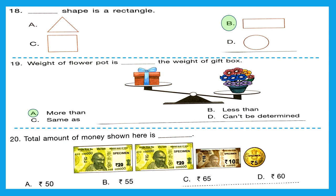Question 20: 'Total amount of money shown here is what?' We have a note of 20, another 20, then 10, and 5. Adding: 20 plus 20 is 40, plus 10 is 50, plus 5 is 55. Our correct option is option B, 55.